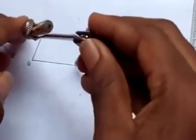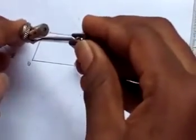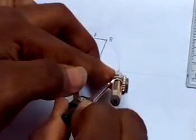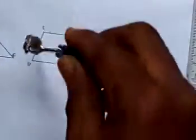Use that center to construct a semicircle on DG. So this is a semicircle on DG.